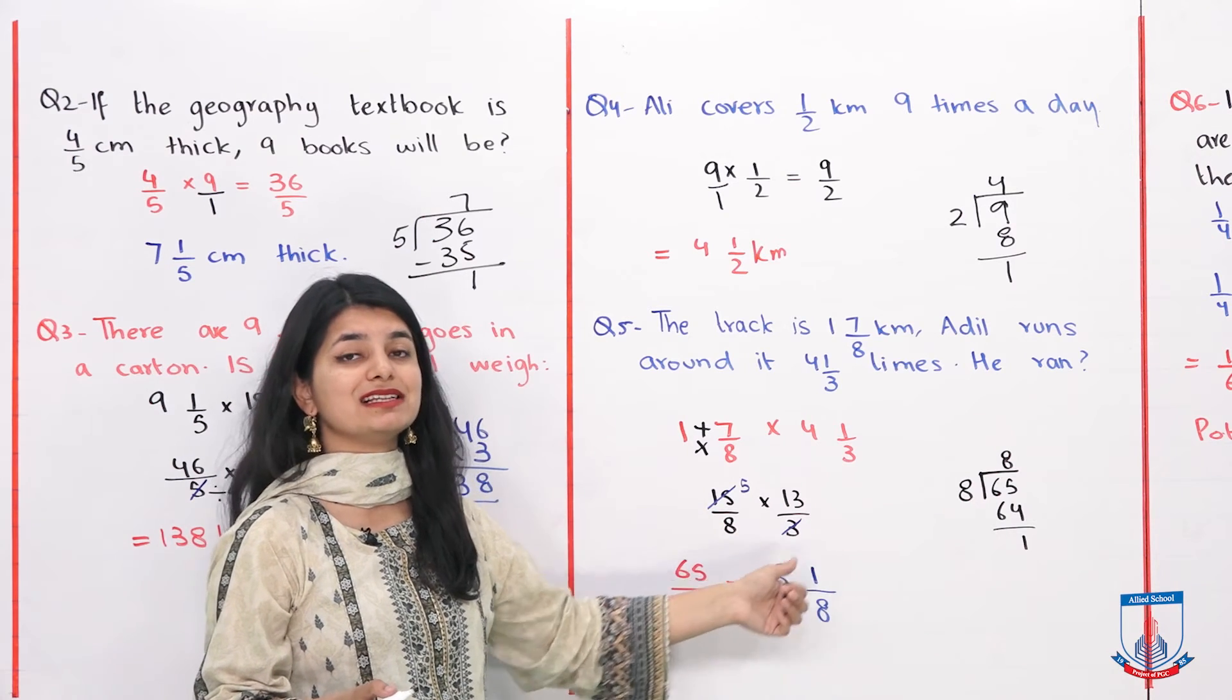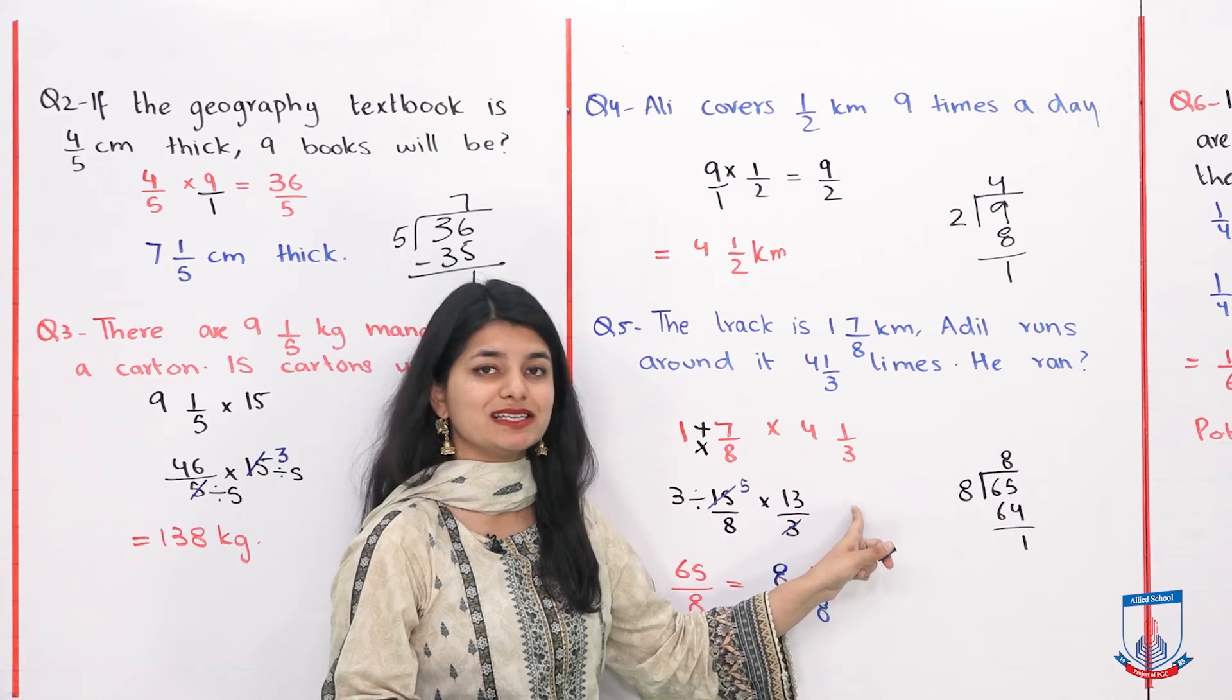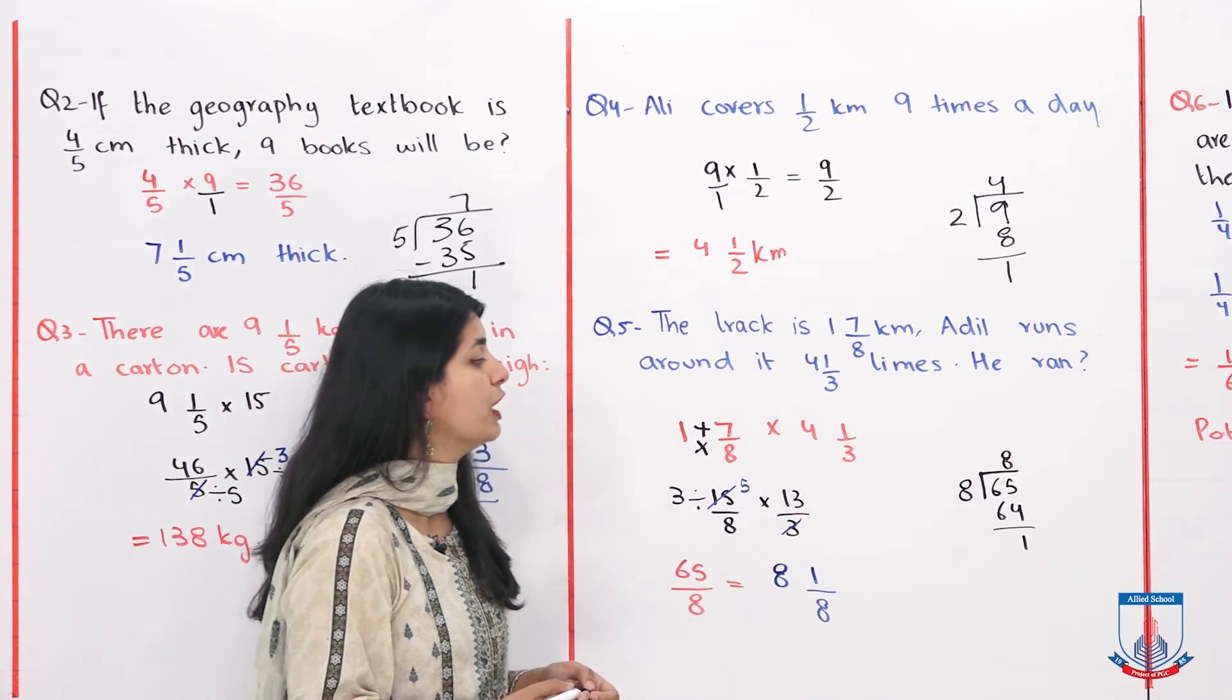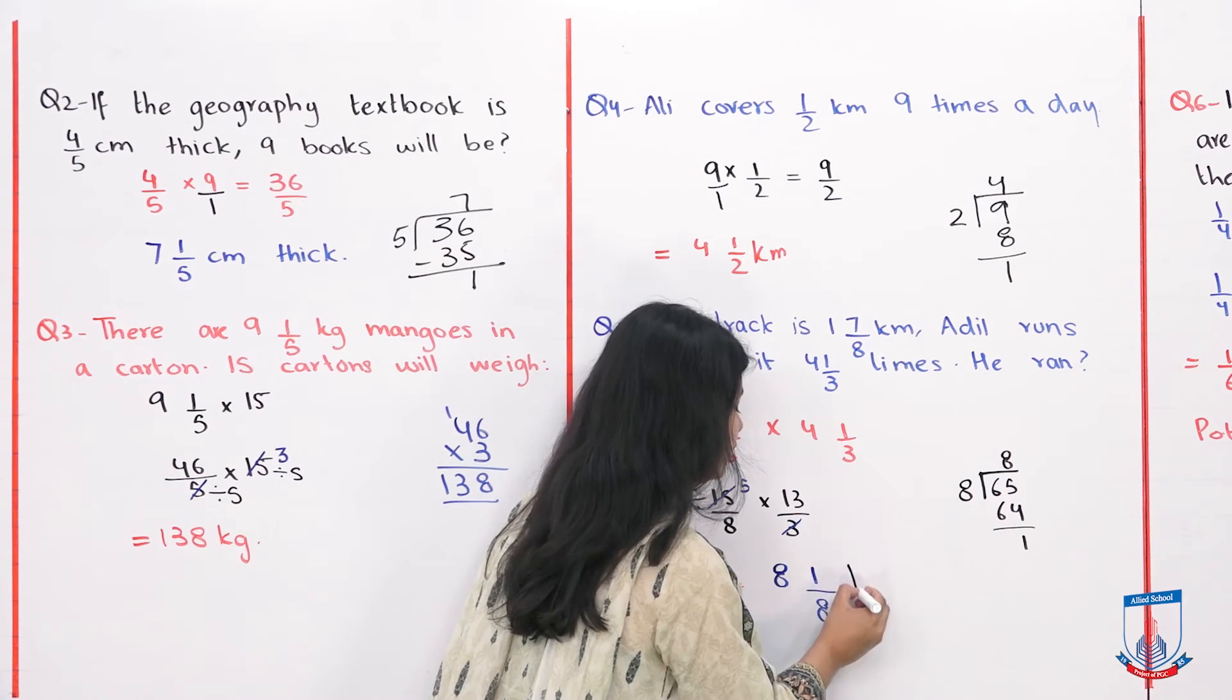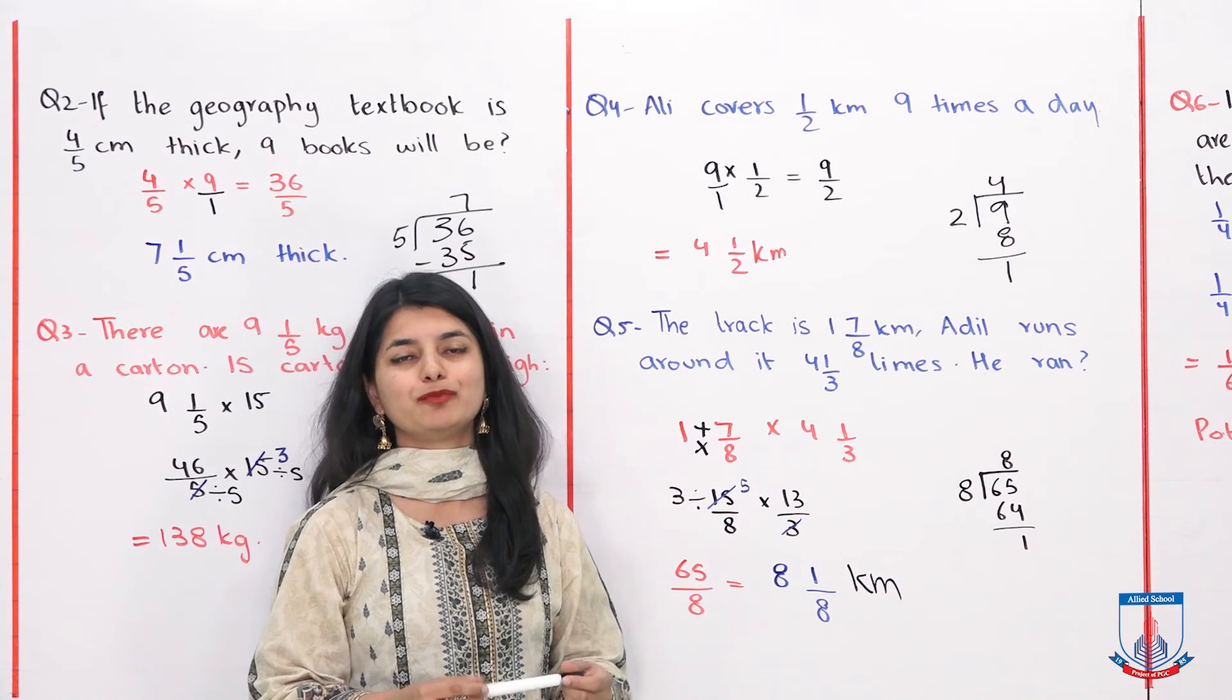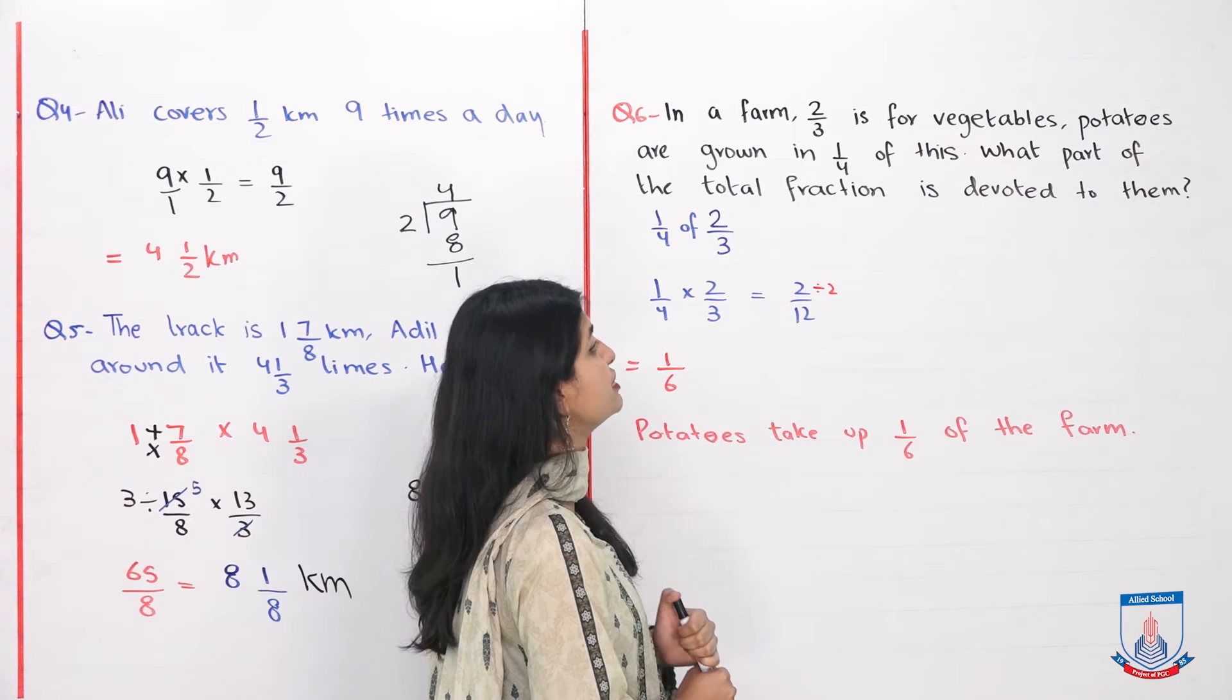Now 15 we can cancel with 3, dividing both by 3. Nothing remains here and 5 comes on top. 5 into 13 you have to do which is 65 divided by 8. Let's divide it to convert to a mixed number.